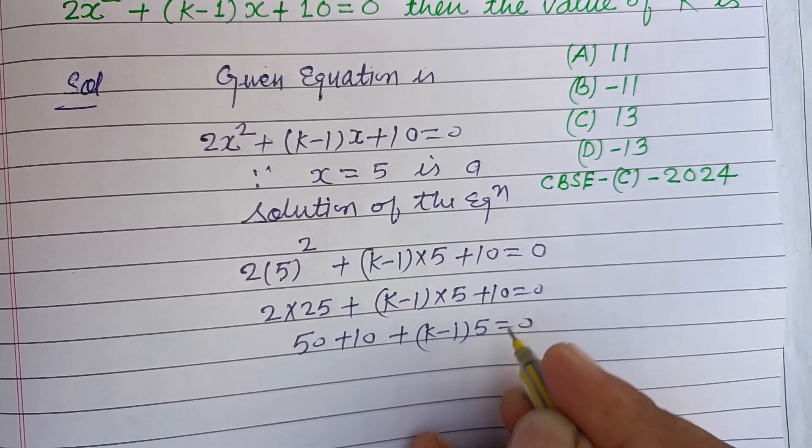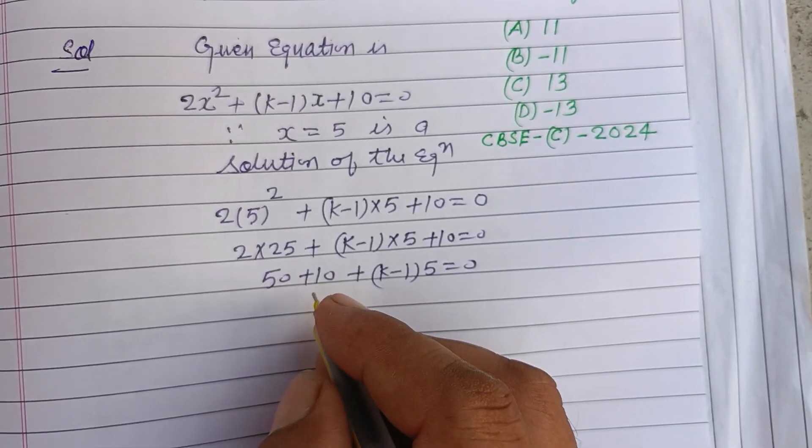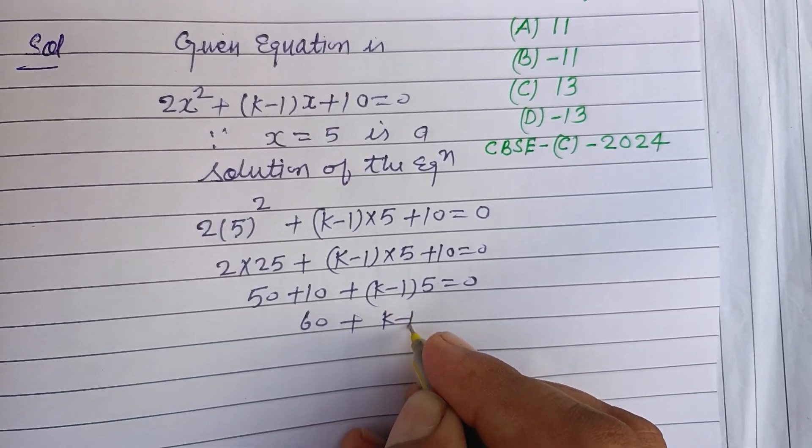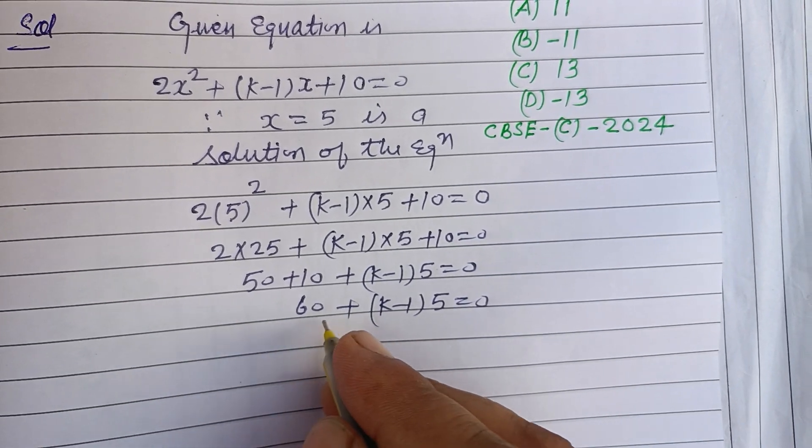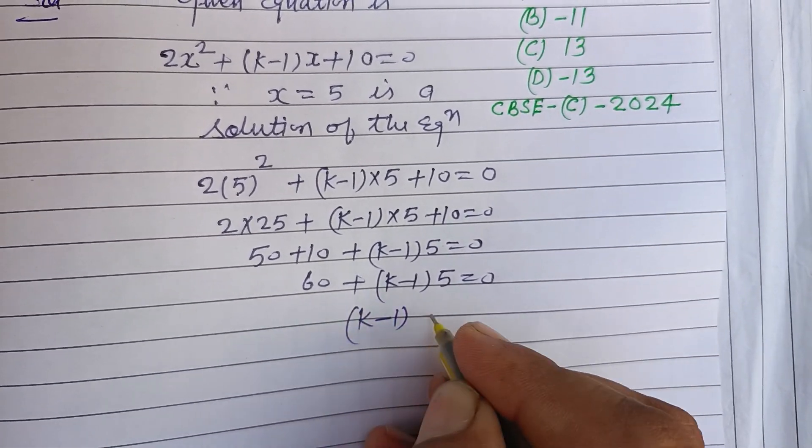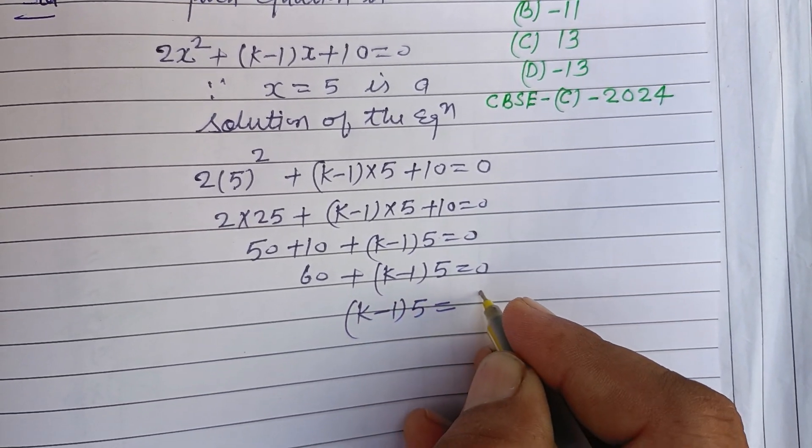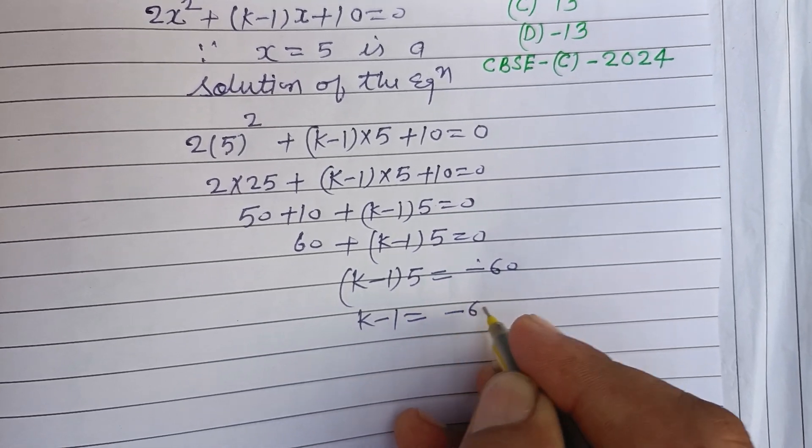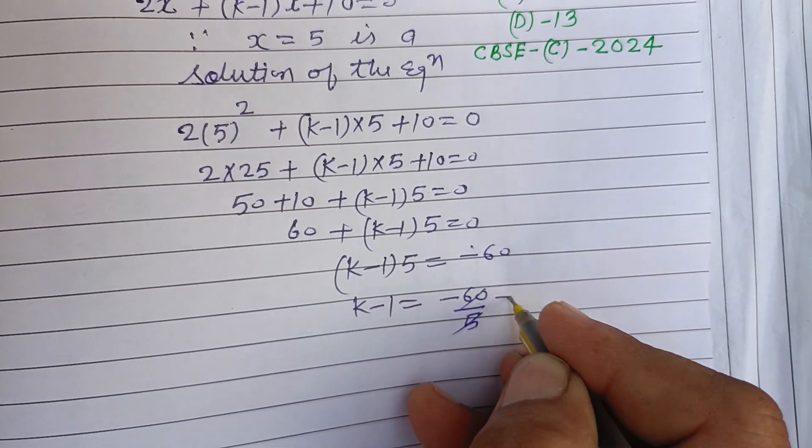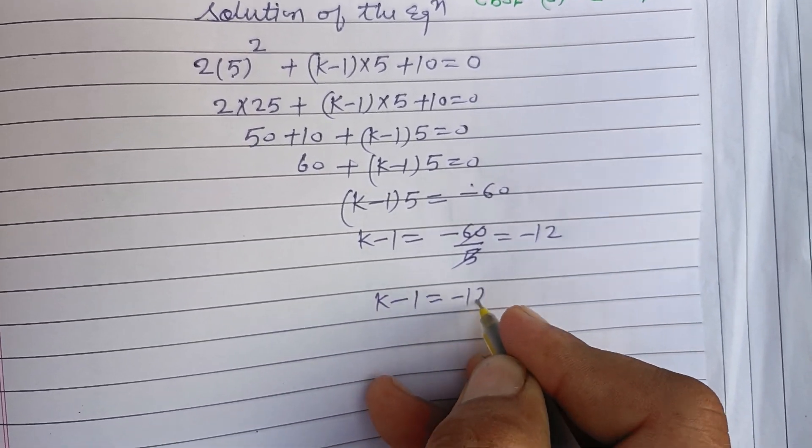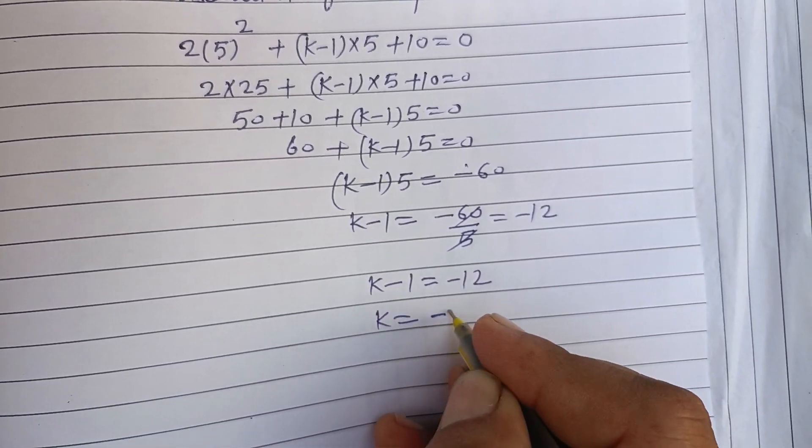We bring this 60 towards the right side, so this is (k-1) into 5 equals -60. k-1 equals -60 upon 5, that is -12. k-1 equals -12, k equals -12 plus 1, k equals -11.